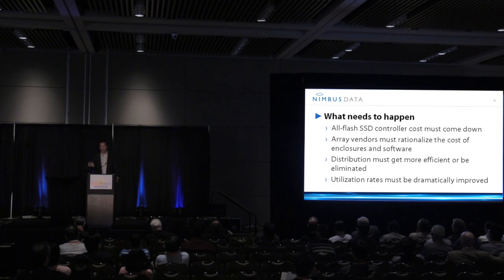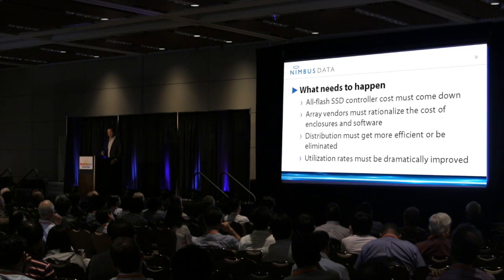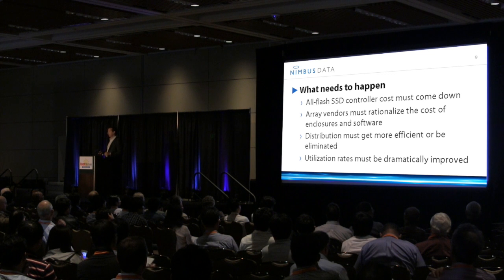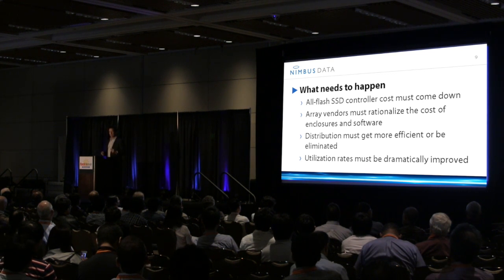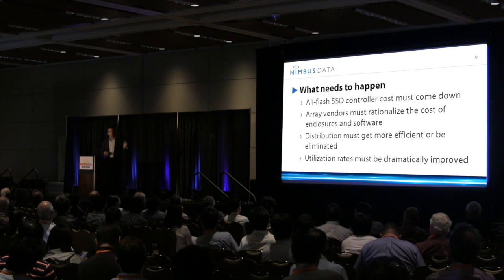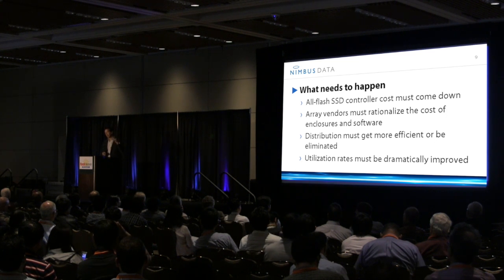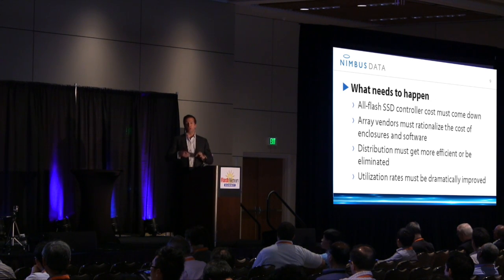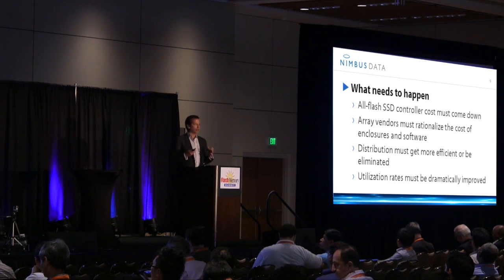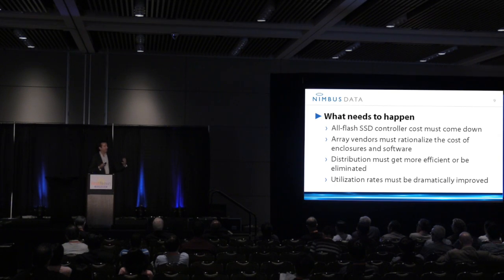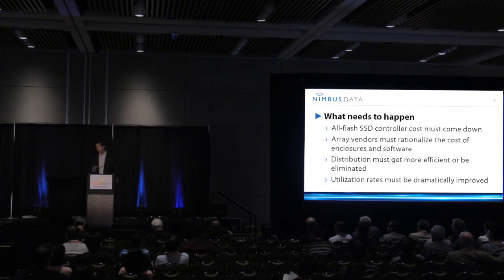If we don't do these things, the risk for the market is very simple: someone like me goes on Amazon and lights up 10 terabytes in a matter of five minutes by filling out some web forms and credit card information, and they're enabled in the cloud with storage that's hot, ready, and running. If we don't fix the hardware cost, the distribution cost, and the flash controller cost, we risk vendors — us included — losing out in the process.